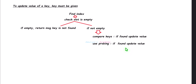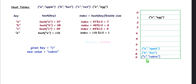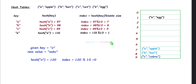Let's take an example. We have a simple hash table without collision. I want to update the value for key 'c' to 'cobra'. First, find its index — 9 — go to that index and check whether that slot is empty. It is not empty, so compare the keys: given key 'c' and the key in the slot 'c' — both match. Match is successful, so update its value. If the key is not found — for example, key 'x' — the slot is empty, so return the message 'key is not found'.